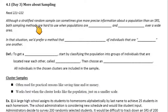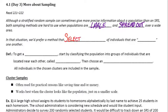Although a stratified random sample can sometimes give more precise information about a population than an SRS, both sampling methods are hard to use when populations are large and spread out over a wide area. In that situation, we prefer a method that selects groups of individuals that are near one another. The new method is to get a cluster sample.